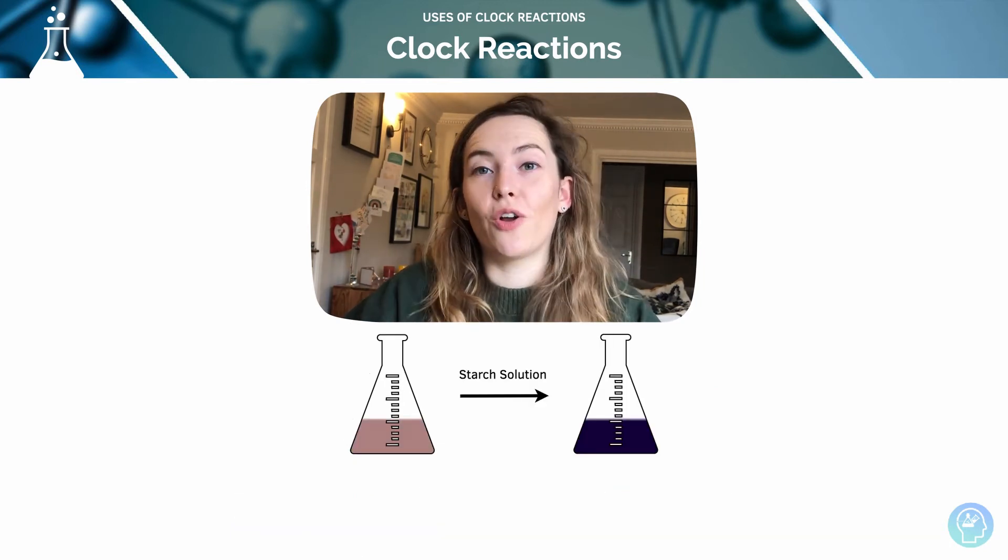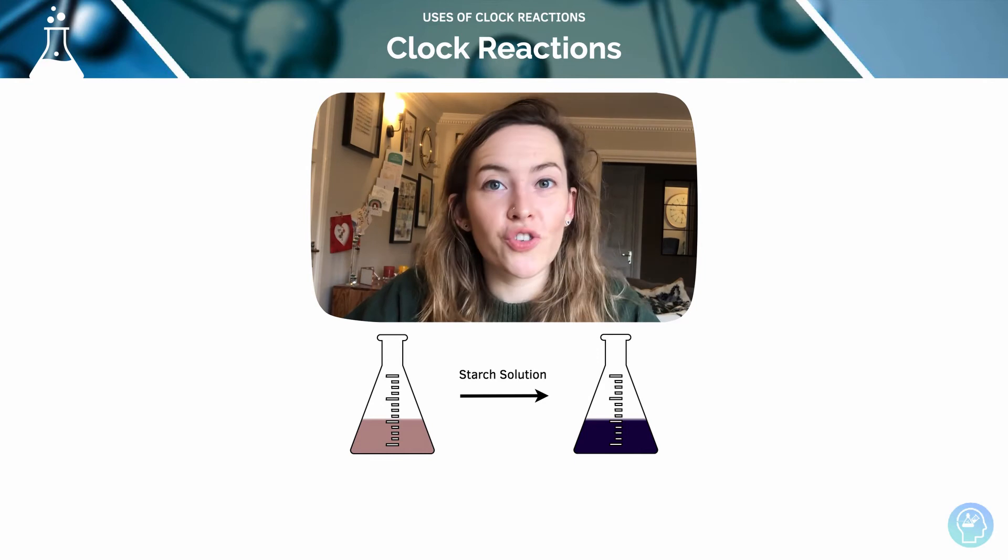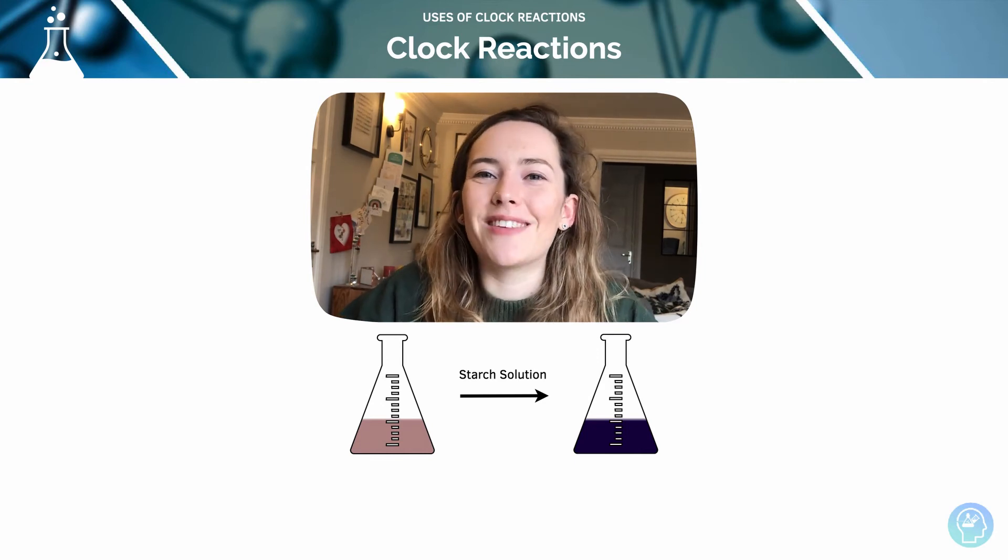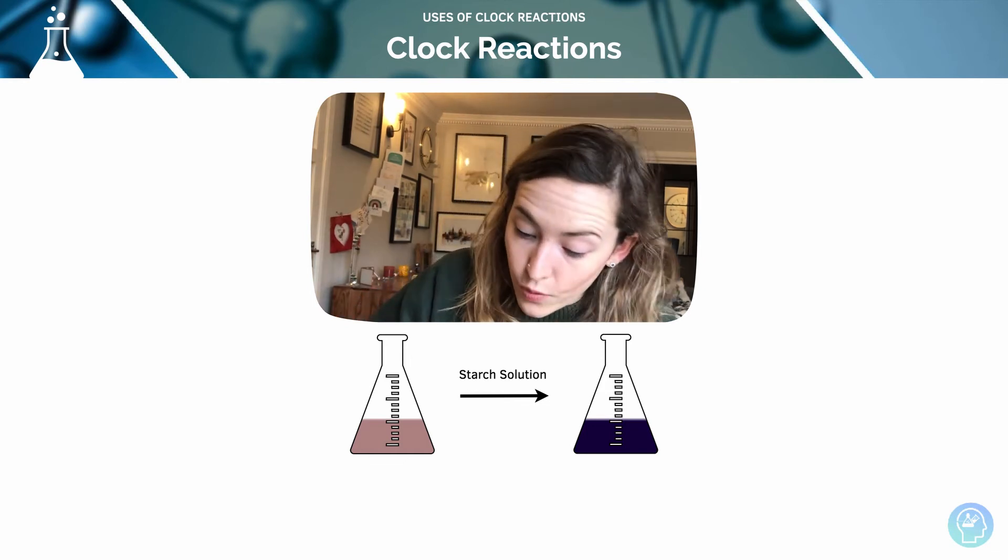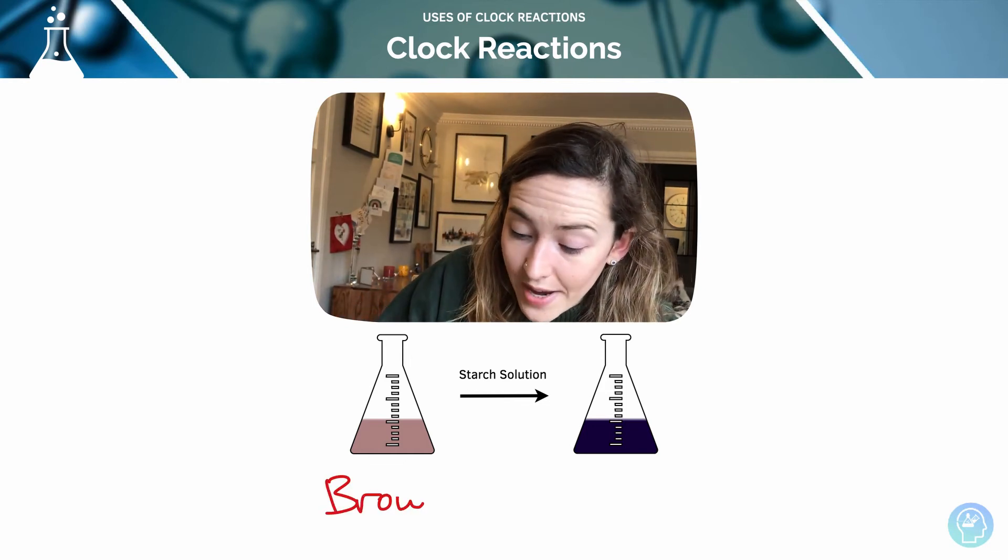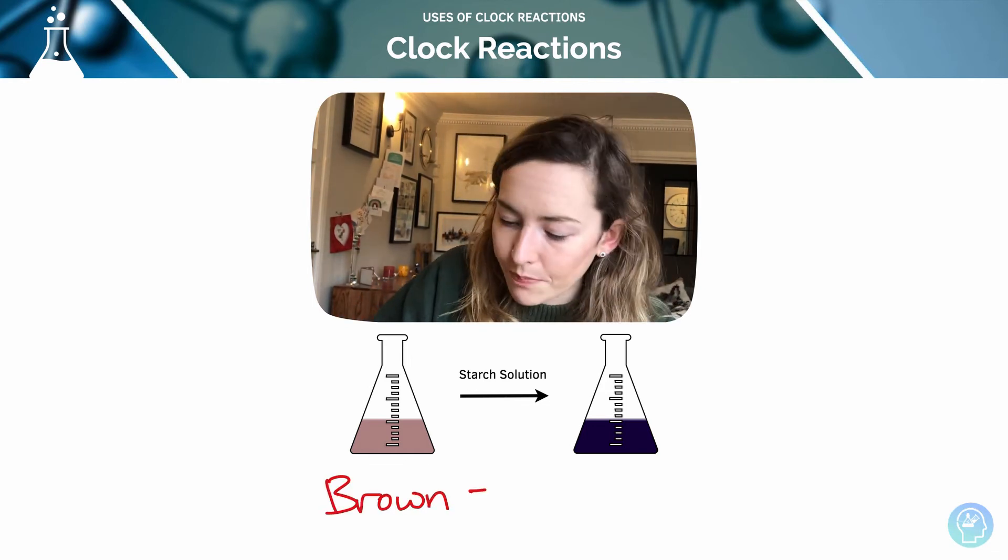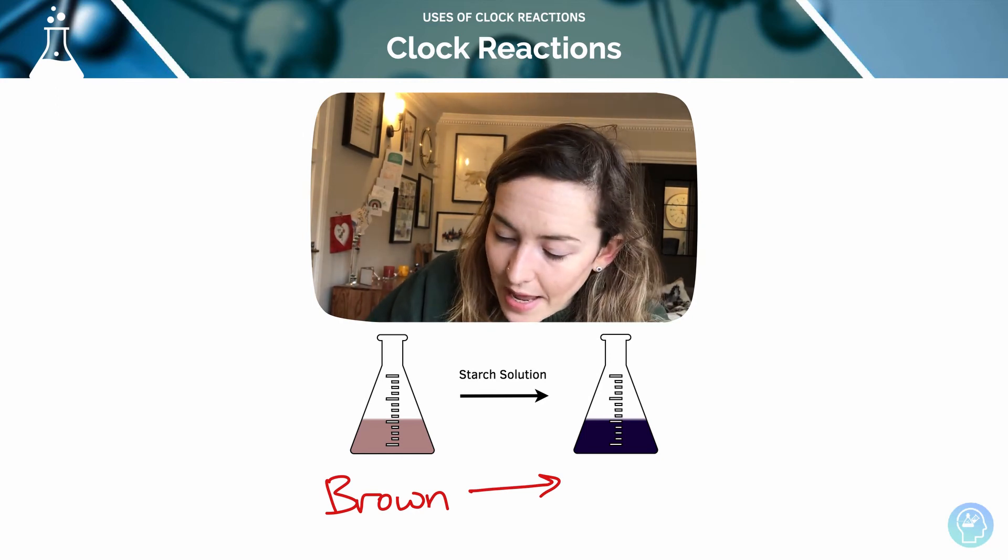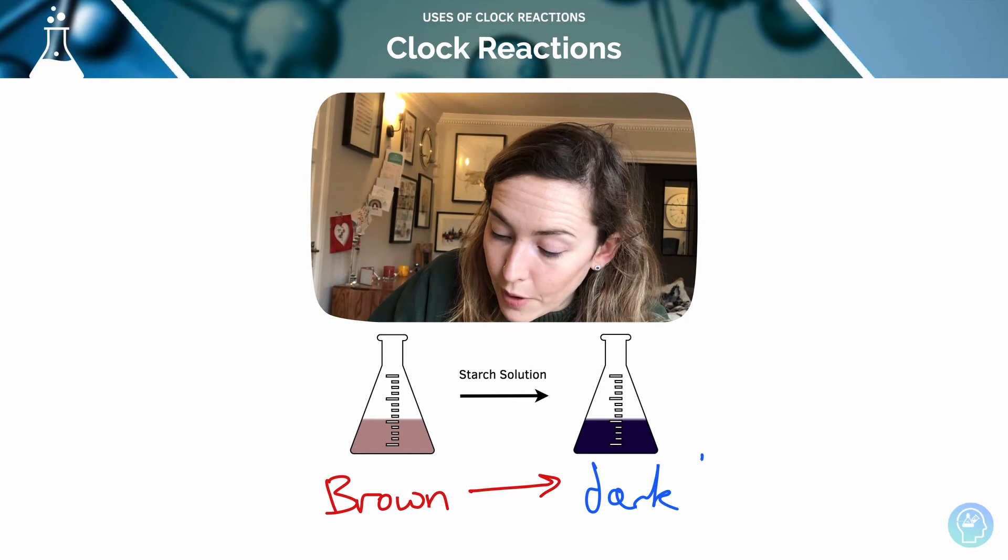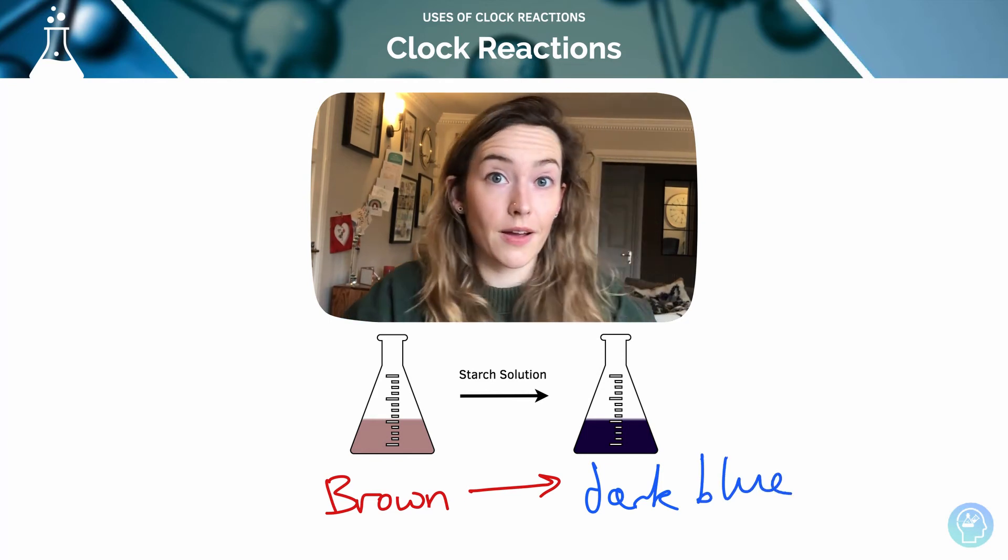Step two of the iodine clock experiment is the addition of starch solution. That solution is going to act as an indicator, it's going to tell us that there's iodine present. It goes from brown, because of course aqueous iodine is brown, when starch is added it detects the iodine and it turns dark blue. So it's really important you remember that color change.